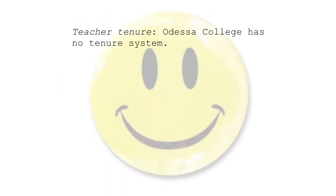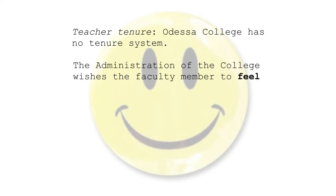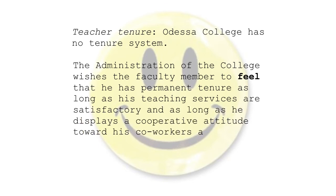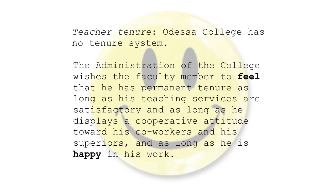At first, the language looks not at all helpful to the plaintiff. It states: 'Odessa College has no tenure system,' but there's more. The administration of the college wishes the faculty member to feel that he has permanent tenure as long as his teaching services are satisfactory, and as long as he displays a cooperative attitude toward his co-workers and his superiors, and as long as he is happy in his work. The Supreme Court held that summary judgment for the defendant was improper because a jury could find that Odessa College had created a legitimate expectation amounting to a property interest. Now all the plaintiff gets is a hearing. We can only wonder what the plaintiff could do to show that he was, in fact, happy in his work. Smile.